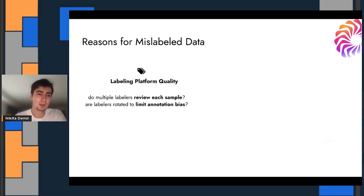So why does mislabel data happen? Part of it has to do with your labeling platform and essentially your budget at the end of the day, how many labelers get to review each sample and whether they're rotated to limit their bias. If you've ever tried to label an entire dataset or a decent chunk of it, you'll notice that over time you start to develop very strict definitions in your head about how to label these labels that might not correspond with other labels.